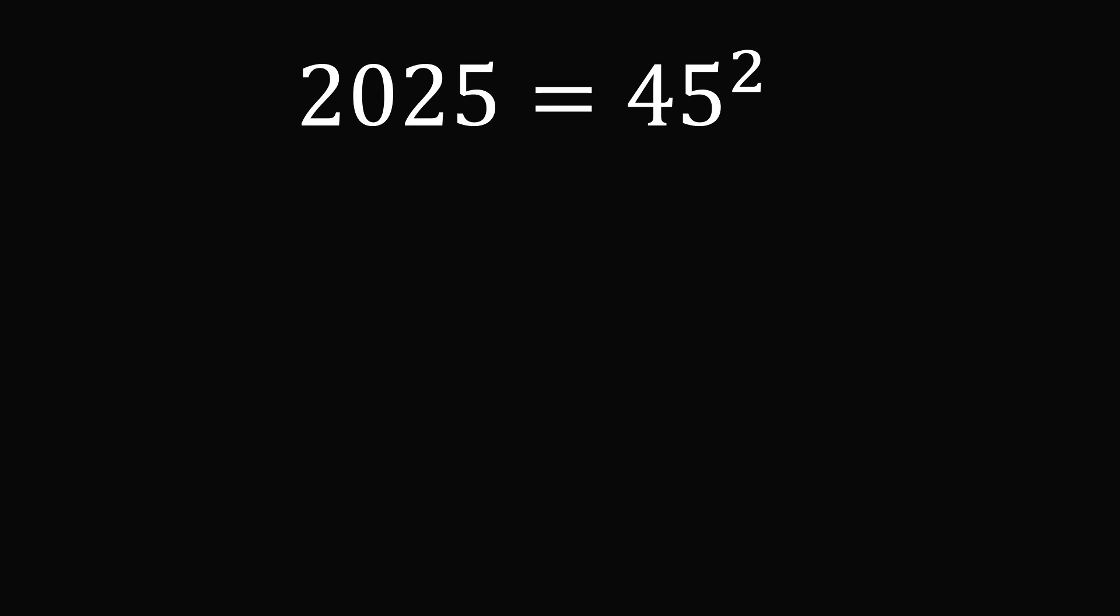Since we have a perfect square year, we have another fun little fact. If you were born in the year 1980, then at some point in 2025 you will turn 45 years old. So the square of your age is exactly equal to the year.